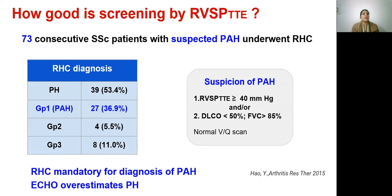For example, 73 consecutive scleroderma patients with suspected PAH underwent right heart catheterization, with suspicion based on RVSP more than 40, DLCO, and FVC. When right heart catheterization was done, pulmonary hypertension was confirmed in only 39 patients — just over 50% — and group 1 PAH was found in only 27. If diagnosis were made based on echo, 73 patients would have been commenced on ERA and PDE5 inhibitors, whereas it would truly be indicated in only 27. So it is very clear that RVSP is not to be used.